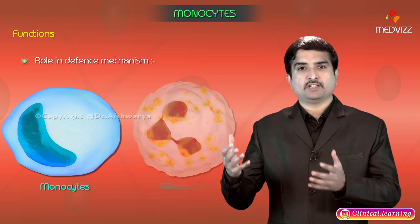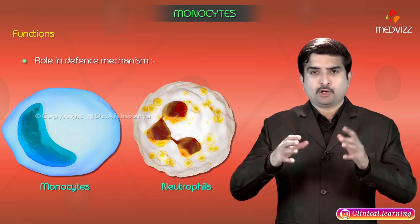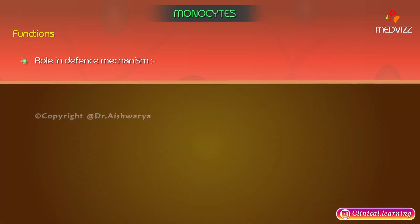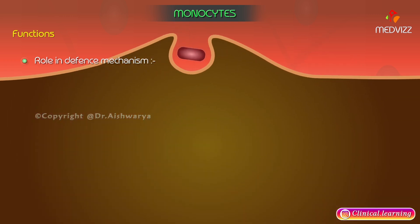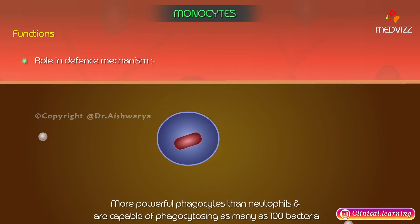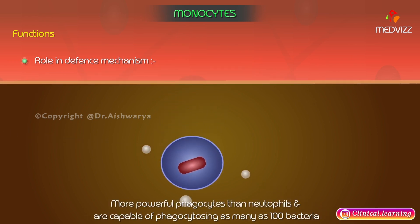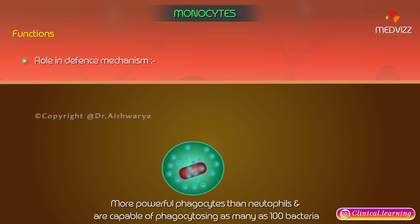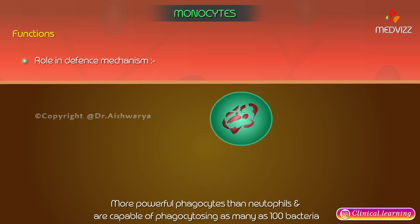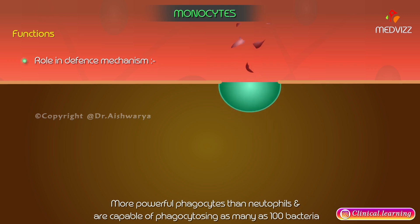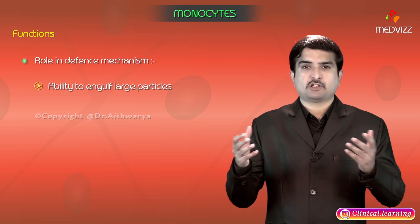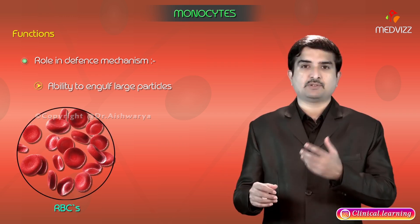Monocytes, along with neutrophils, play a predominant role in the body's defense mechanism. Their main function is phagocytosis. They are the most powerful phagocytes compared to neutrophils, and are capable of phagocytosing as many as 100 bacteria at a time. They also have an ability to engulf larger particles such as RBCs.